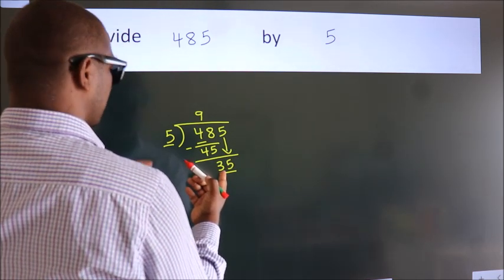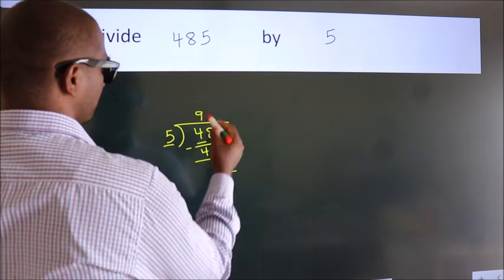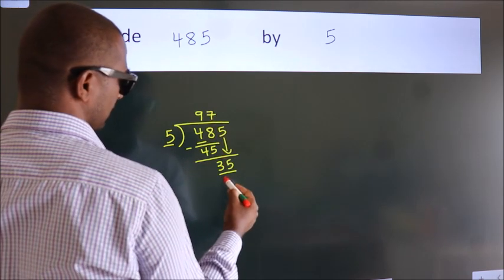When do we get 35? In the 5 table. 5 sevens, 35.